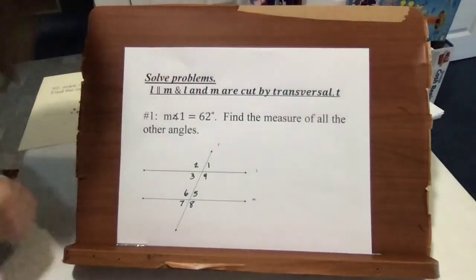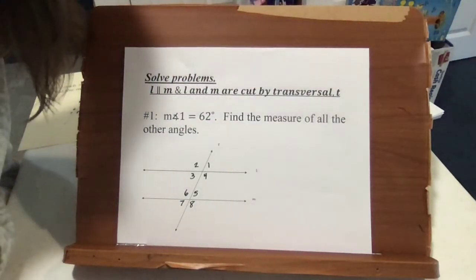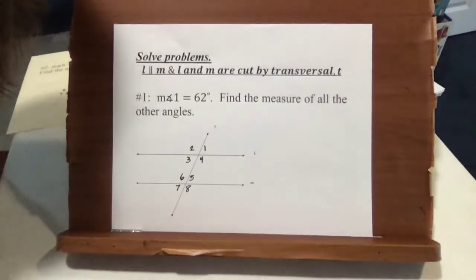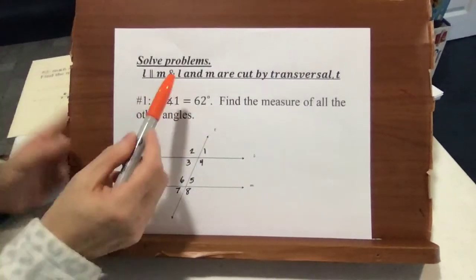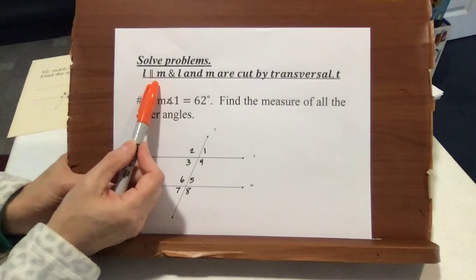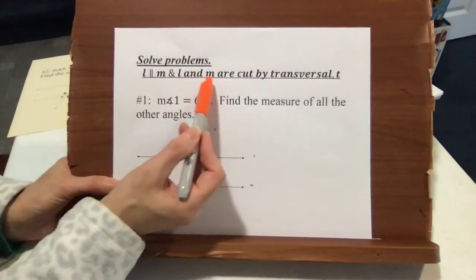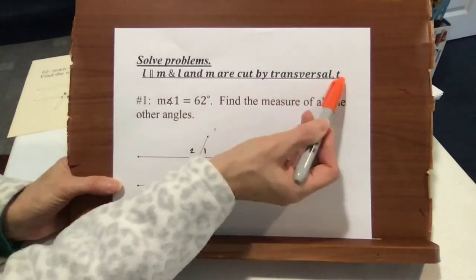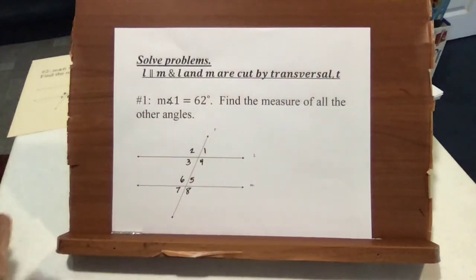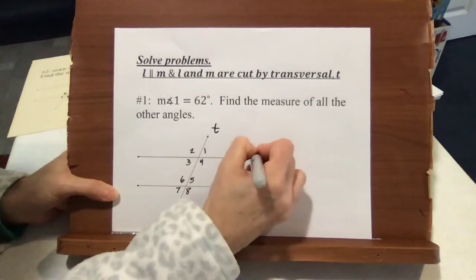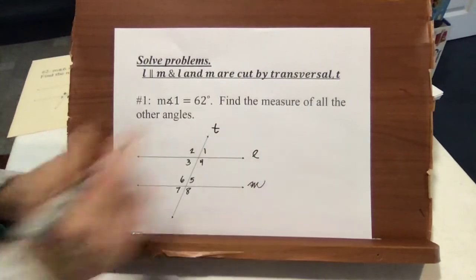Let's look at a few problems to see how to solve these. We have line L is parallel to line M, and line L and line M are cut by transversal T. It's a little hard to see, so I'm going to make this bigger. This is T, this is line L, and this is line M.